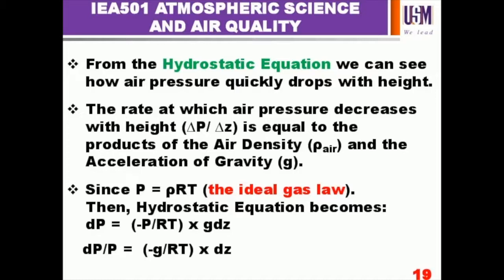In our ideal gas equation, since P equals density times gas constant times temperature, the hydrostatic equation becomes: instead of density, we replace it. The change in pressure equals negative P over RT, which is our density, multiplied by acceleration due to gravity and the change in height. So the change in pressure over pressure equals negative G over R times the change in height.